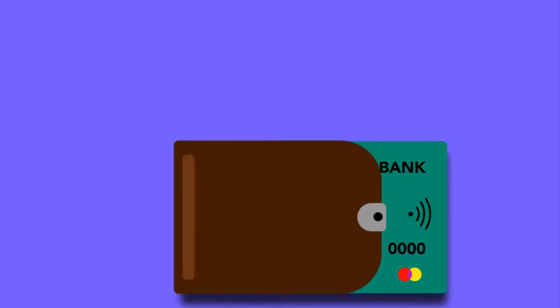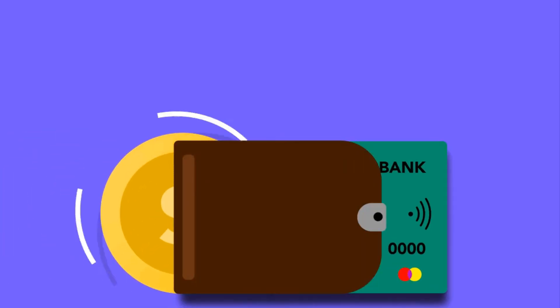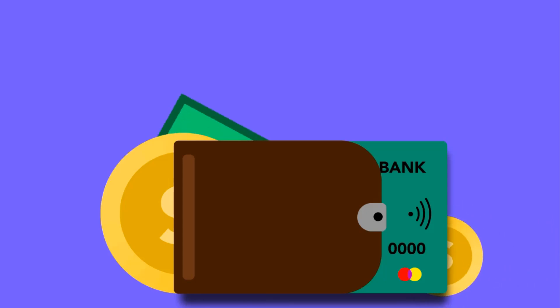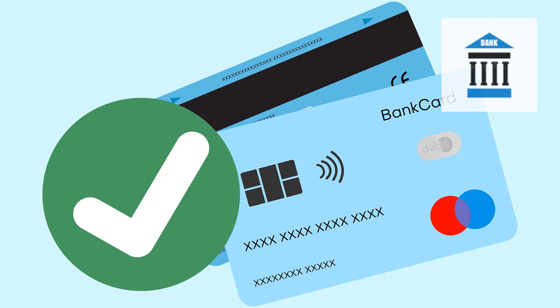So to send money from PayPal to Venmo, there are two main methods you should know. The first one will involve you linking Venmo and PayPal to the same bank account, meanwhile the second will require that you link PayPal and Venmo to the same debit card. So we'll start with the first one.